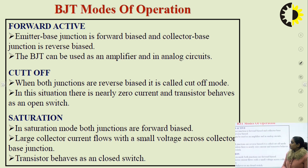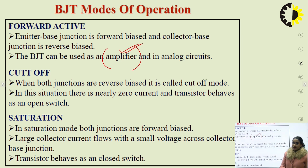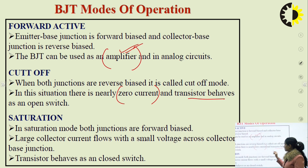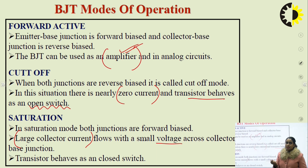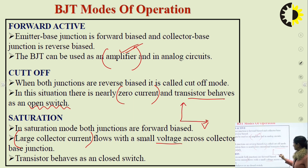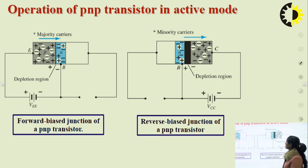In forward active mode: emitter-base junction is forward biased, collector-base junction is reverse biased — the BJT can be used as an amplifier. In cutoff mode, when both junctions are reverse biased, there is nearly zero current and the transistor behaves as an open switch. In saturation mode, both junctions are forward biased; large current flows with a small applied voltage, and the current does not increase further beyond that region.